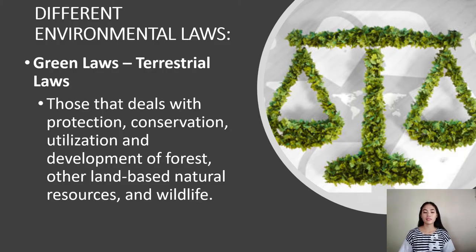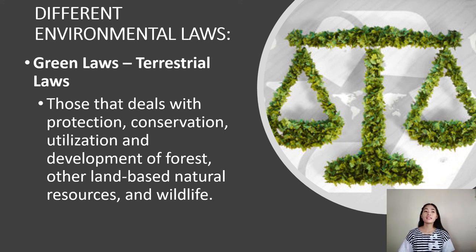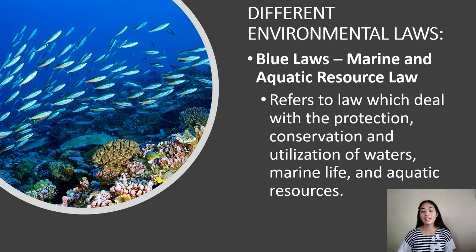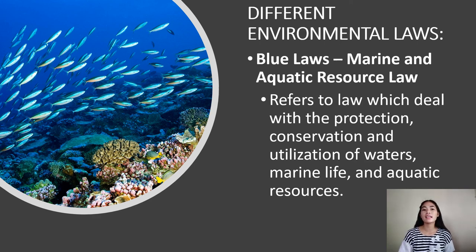There are three different environmental laws. First are green laws, or terrestrial laws — those that deal with the protection, conservation, utilization, and development of forests, other land-based natural resources, and wildlife. Green is used since land and forests are generally supposed to be green. Land-based wildlife is also included as forests are their habitat. Second are blue laws, or marine and aquatic resource laws — referring to laws that deal with the protection, conservation, and utilization of waters, marine life, and aquatic resources, encompassing both inland waters such as rivers, lakes, and streams, as well as the ocean.